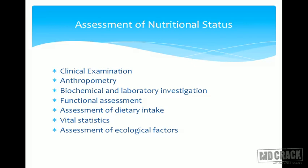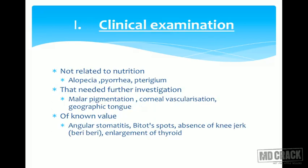As you can see on your slide, you have various things which we use: clinical examinations, anthropometry, biochemical and laboratory investigations, functional assessment, assessment of dietary intake, vital statistics, and assessment of ecological factors. These are the various measurements by which we directly and indirectly gauge the nutritional status of the population.